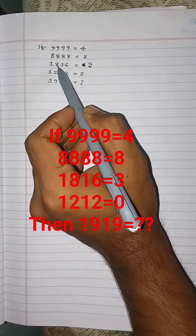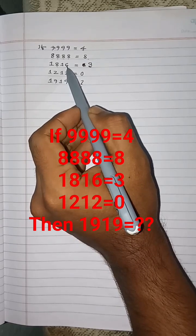Here in 1, 8, 1, 6, in 8, two circles are there, in 6, one circle is there, so 3.